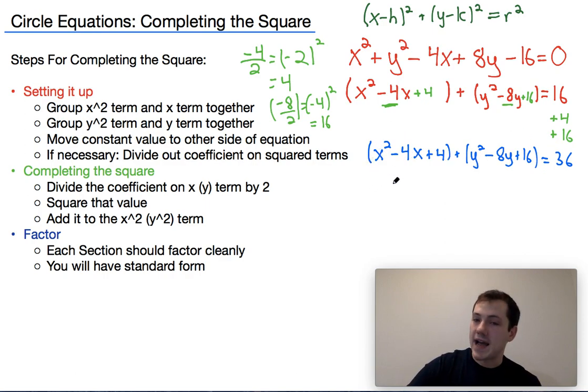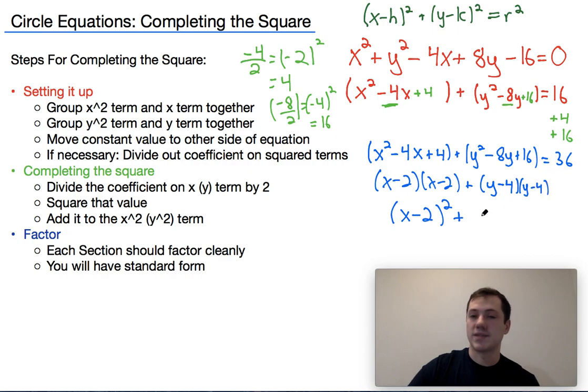Now I go ahead and factor this term and factor this term. When factoring, we're not going to go too much into that in this video, but I need two values that multiply to 4 and add to negative 4. So that would be x minus 2 and x minus 2, which conveniently we can write as x minus 2 squared. Start to see how this is looking a lot more like the standard form. If I try to factor y squared minus 8y plus 16, they need to multiply to 16, add to negative 8. So that would be y minus 4 times y minus 4, which would give me y minus 4 squared equals 36.